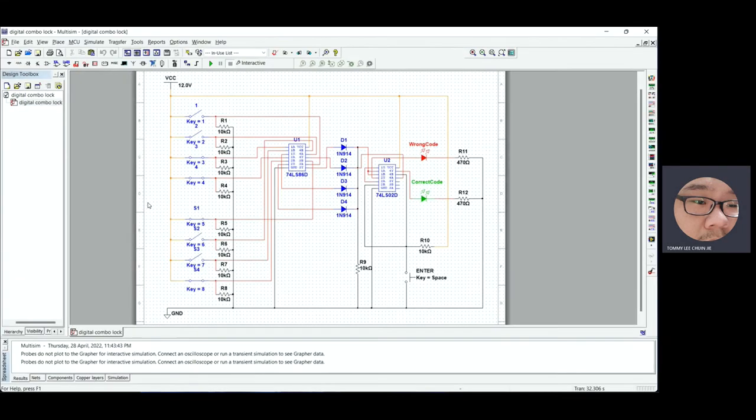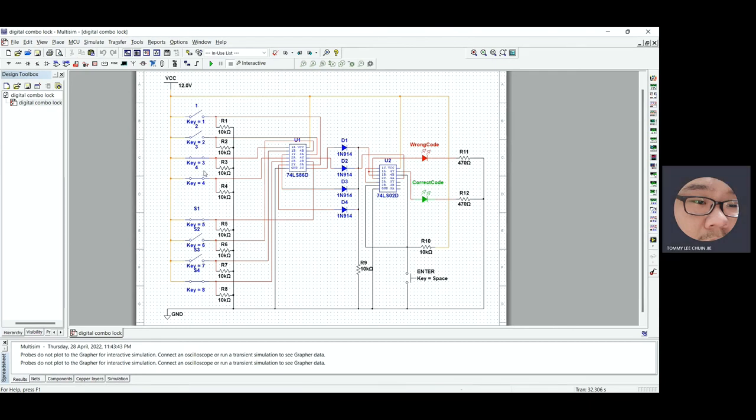Next, I will show our simulation. In our Multisim, this is our digital combination lock. So right now, I will run the simulation. So when the user try to enter, for example, 0011 as the key code, in order for them to know whether it's correct or wrong, they will have to press the push button. So as you can see, the red LED lights up, it shows it is the wrong code.